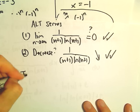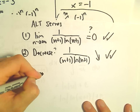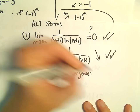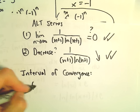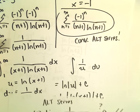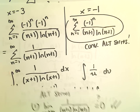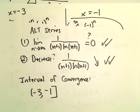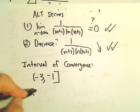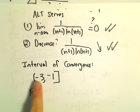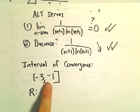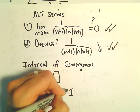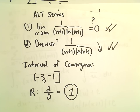So the interval of convergence is from negative 3 to negative 1. Negative 3 is excluded because we got a divergent improper integral, and negative 1 is included because we had a convergent alternating series. The interval of convergence is (-3, -1]. The radius of convergence — from negative 3 to negative 1 is two units long, divided by 2 — gives us a radius of convergence of 1.